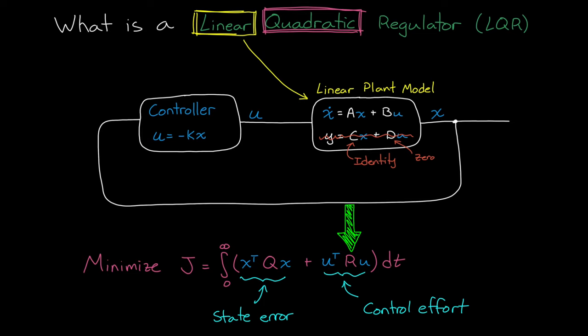So now given the tuning parameters Q and R and the system dynamics A and B, what is the optimal gain matrix K? That is, what is the K that's going to produce the lowest overall cost? And we can figure that out pretty easily with a single command in MATLAB.